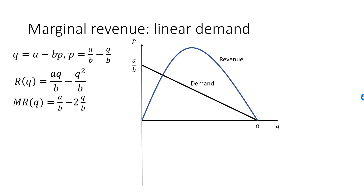The marginal revenue is the derivative of this function: A over B minus 2 times Q over B. The marginal revenue function has an intercept A over B and a slope which is twice as big as the slope of the demand curve.